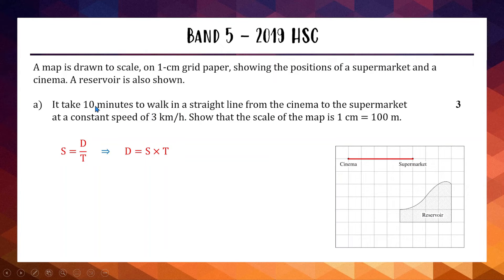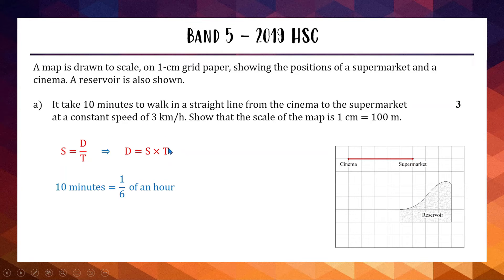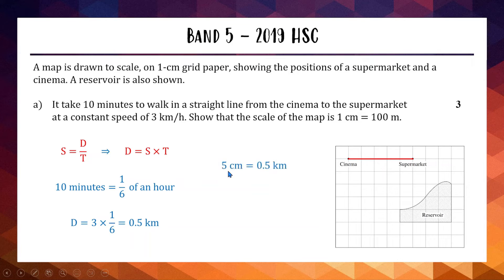The trick here is that speed is in km/h but time is in minutes, so we need consistent units. It's easier to convert 10 minutes into hours: 10 goes into 60 six times, so 10 minutes is one sixth of an hour. Distance equals 3 km/h times one sixth of an hour equals 0.5 km. That's 500 meters. The cinema to supermarket is 5 cm on the map, so 5 cm equals 500 m, therefore 1 cm equals 100 meters as required.